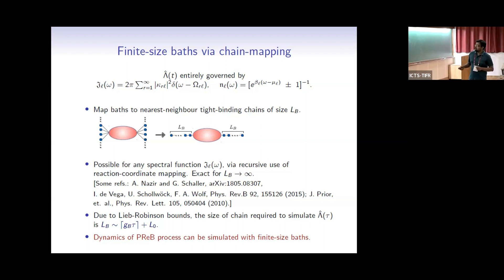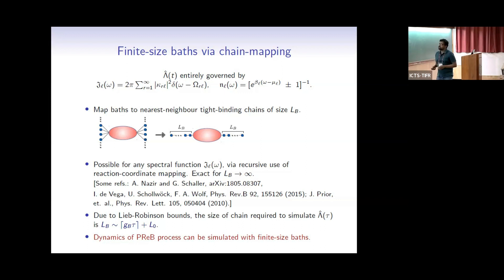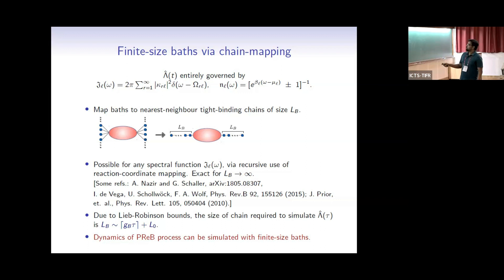Think about the dynamics you are trying to simulate. Initially the whole chain is in a thermal state with no dynamics. At the initial time you switch on the system-bath coupling, so any dynamics in the chain spreads from there. Since it is a nearest-neighbor lattice, it spreads with some finite velocity due to Lieb-Robinson bounds. So if you are evolving up to a finite time τ, you never need an infinite-size chain — you need a chain of size roughly of order τ. In the refreshed-baths dynamics, you can always use finite-size baths.